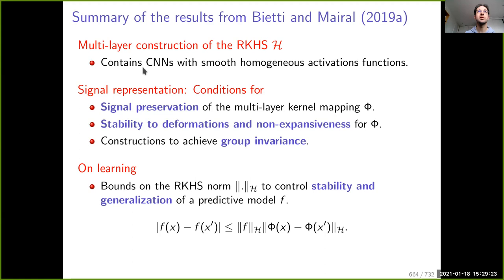In this paper we built a framework where convolutional neural networks with smooth homogeneous activation functions live. We were able to characterize properties about the signal representation — in particular, we studied the ability of the kernel mapping phi to keep information about the input signal.